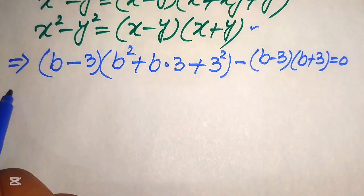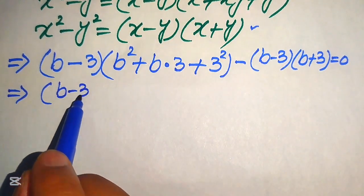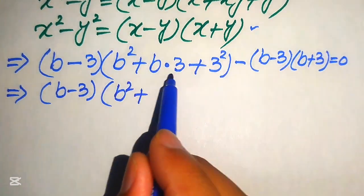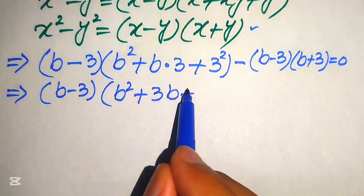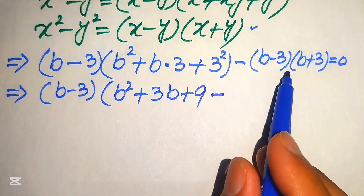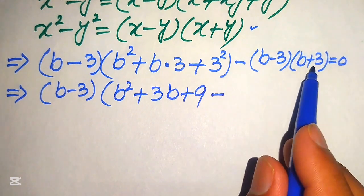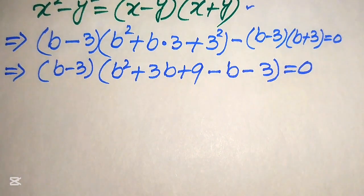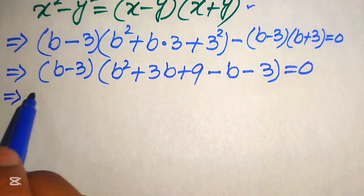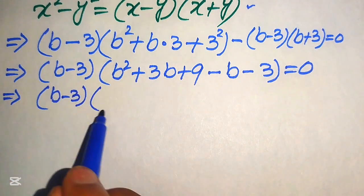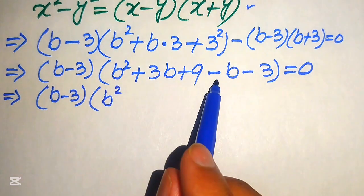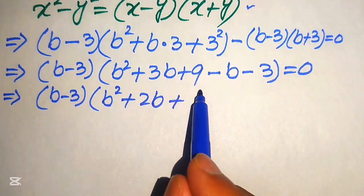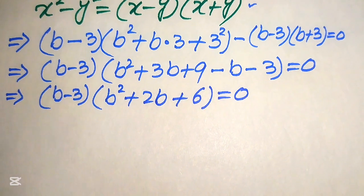We notice that b minus 3 is a common factor in both terms. Taking b minus 3 common, the remaining bracket becomes b squared plus 3b plus 9, minus b minus 3. Distributing the negative sign and combining like terms: 3b minus b equals 2b, and 9 minus 3 equals 6, giving b squared plus 2b plus 6, all equal to 0.